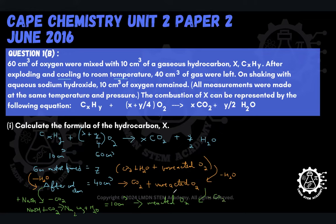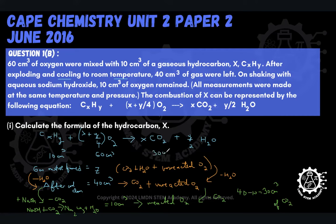When we add NaOH, we went from a volume of 40 cm³ to 10 cm³, which means the amount of carbon dioxide that was present and was taken out must have been 30 cm³. So we get that 30 cm³ of carbon dioxide was formed as a result of combustion. Going back to our volumes, we put 30 underneath the CO₂.